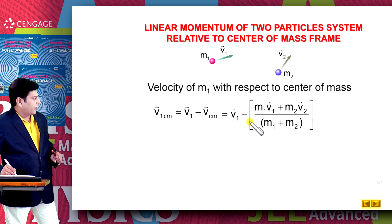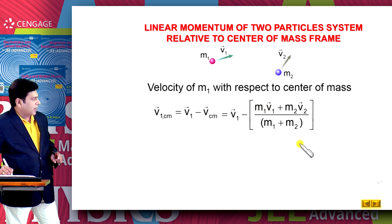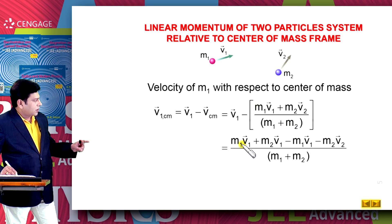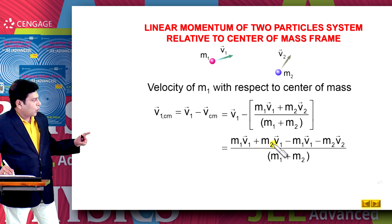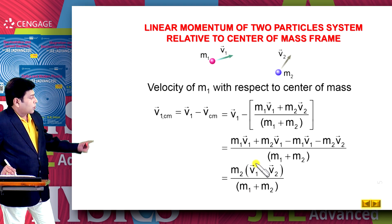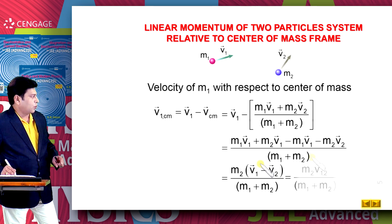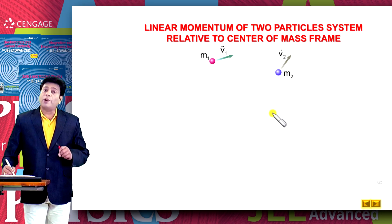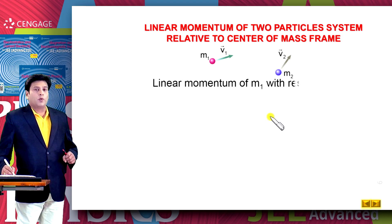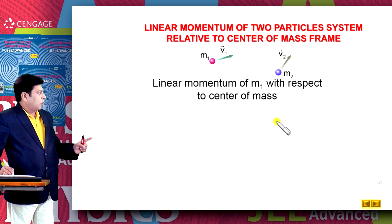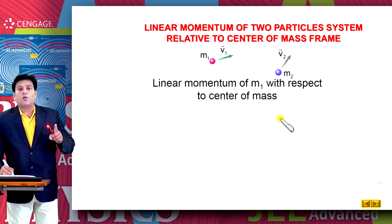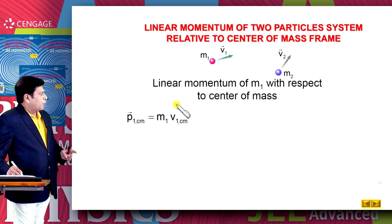Now we can simplify: (m1 + m2) will multiply with v1 and this minus m1·v1 minus m2·v2 — you can observe that m1·v1 and m1·v1 cancel. Here m2 appears in both terms, so we take m2 as common, and this expression equals m2·(v1 − v2) / (m1 + m2). We observe that this term is v12, that is the velocity of particle 1 with respect to particle 2. Let us call this equation number 1.